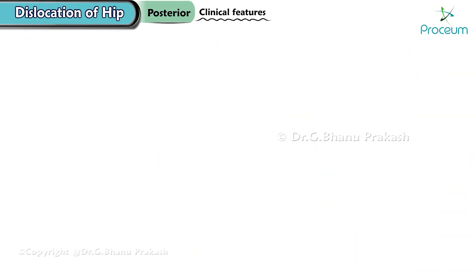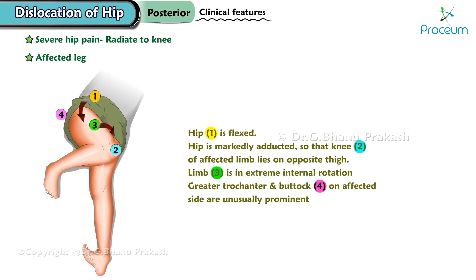Clinical features. Clinical features of posterior hip dislocation include severe hip pain that can radiate to the knee. The affected leg often appears shortened and the hip is typically internally rotated and adducted.